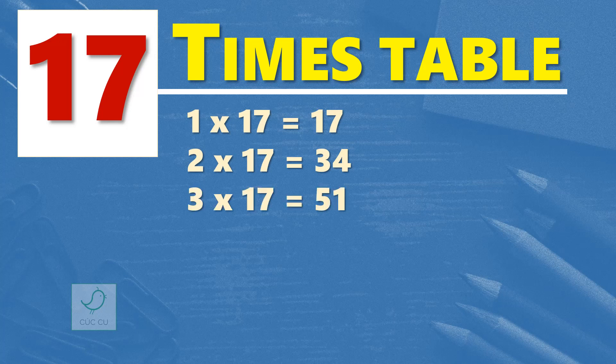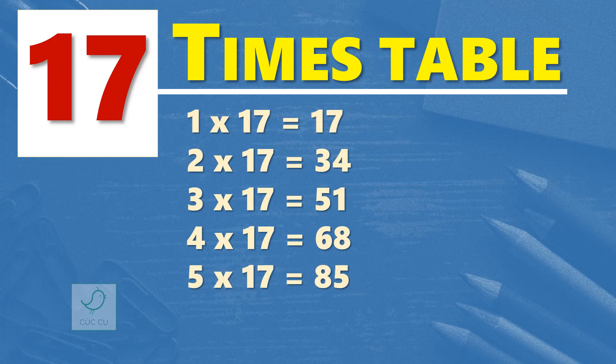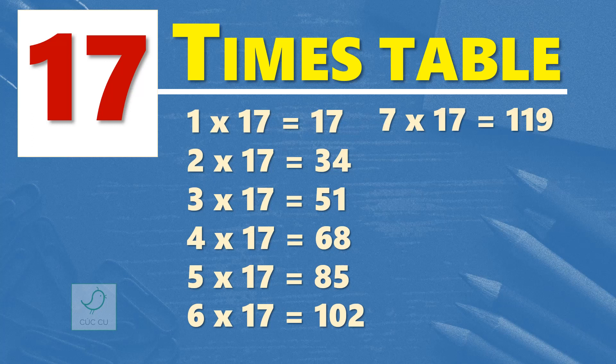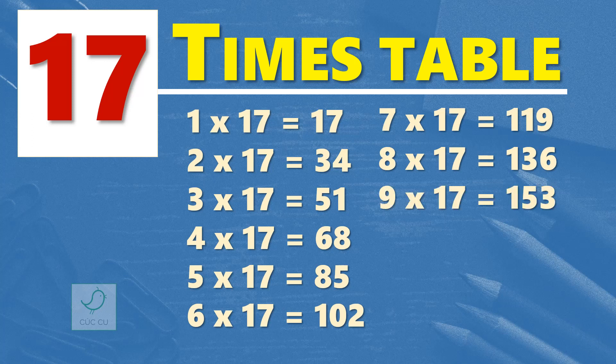4 times 17 are 68. 5 times 17 are 85. 6 times 17 are 102. 7 times 17 are 119. 8 times 17 are 136. 9 times 17 are 153.